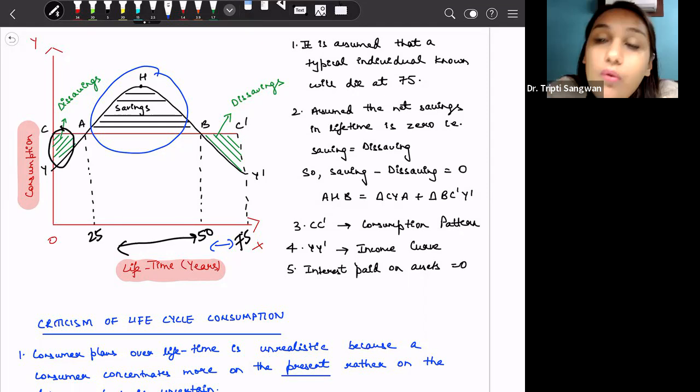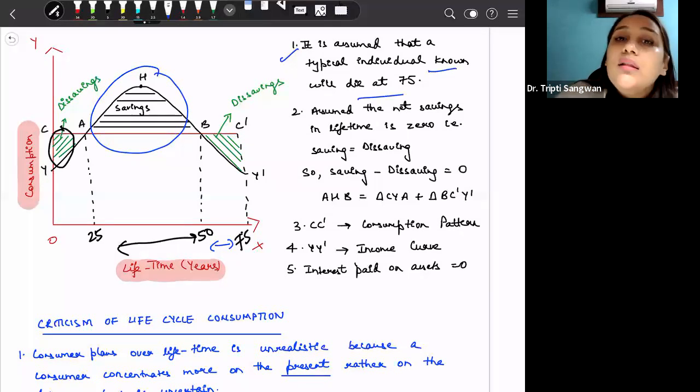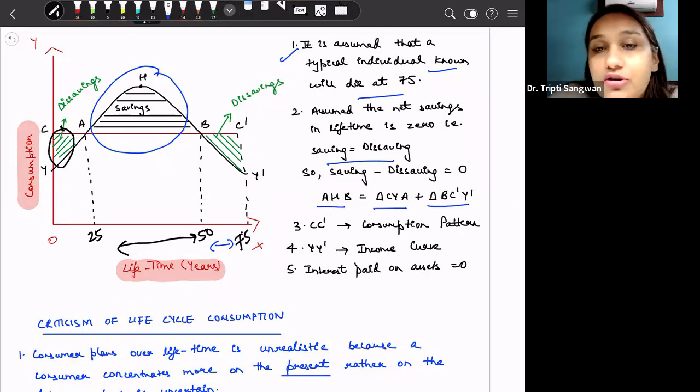So this is how an individual consumes his income. It is assumed that a typical individual will die at 75. Then it is assumed that the net savings in lifetime is 0. That is, savings is equal to dissavings. And thus, this entire triangle A, H, B is equal to triangle C, Y, A plus triangle B, C dash, Y dash.